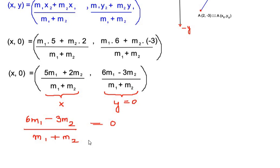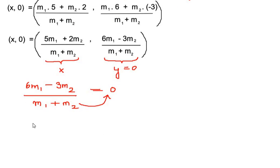Now here the denominator multiplies with 0 and anything multiplied with 0 gives you 0. So we are left with 6m₁ - 3m₂ is equal to 0. So let us take the negative 3m₂ on the other side of equal sign. We get 6m₁ is equal to 3m₂.